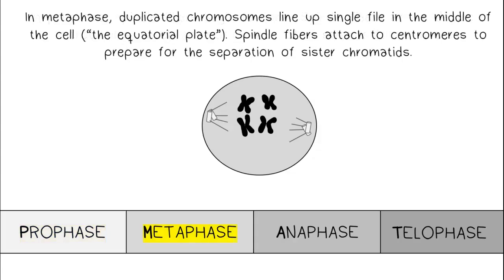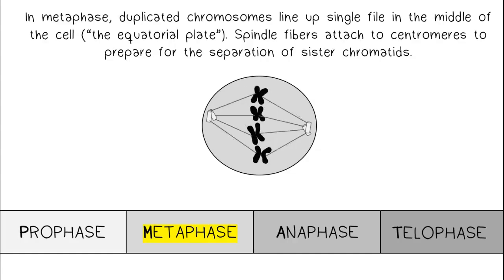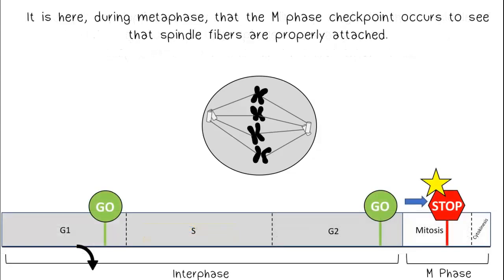In metaphase, duplicated chromosomes line up single file in the middle of the cell. Spindle fibers attach to centromeres to prepare for the separation of sister chromatids. It is here during metaphase that the M phase checkpoint occurs to verify that spindle fibers are properly attached.